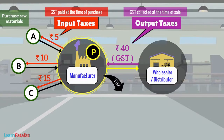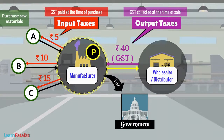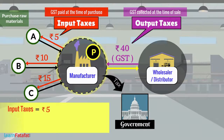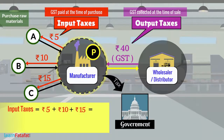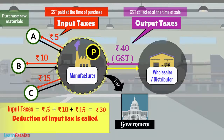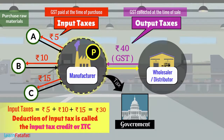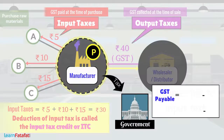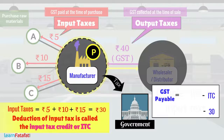While paying taxes to the government, a trader can deduct the input taxes which are already paid at the time of purchase — here it is Rs.5 plus Rs.10 plus Rs.15, which equals Rs.30. This deduction of input tax is called the Input Tax Credit or ITC. Accordingly, the trader has to pay GST by subtracting the input tax credit from the output tax.